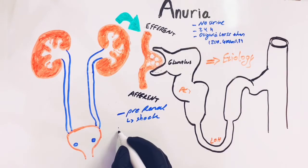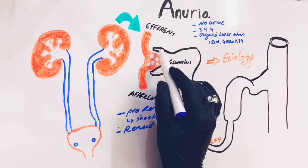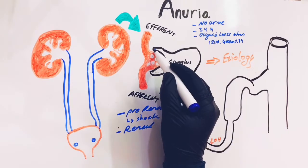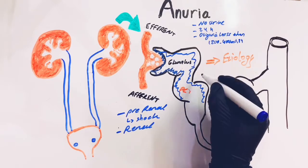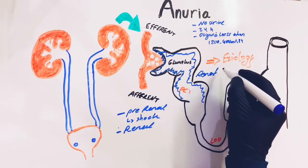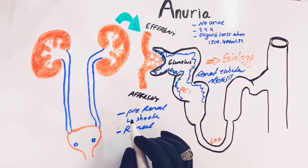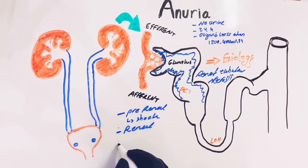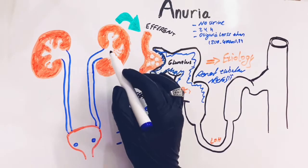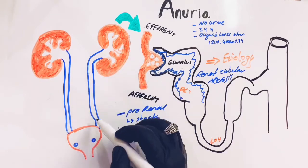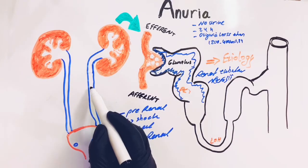For the renal etiology, it includes conditions that damage or affect the renal epithelium, leading to decreased urine excretion, like tubular necrosis. For the postrenal causes, bilateral sudden complete renal or ureteric obstruction suppresses the renal excretion of urine.